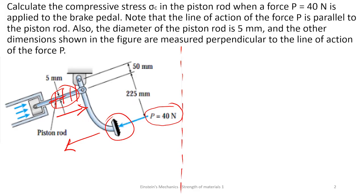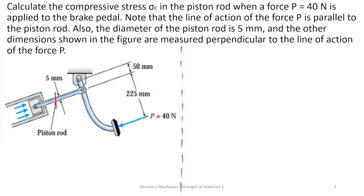It is very simple. We are given some parameters — let's write them down and do the analysis. First, we have a force P which is 40 Newton. We also have the diameter of the piston, which is 5 millimeters. We can choose to work the area in millimeters or we can choose to work in meters.